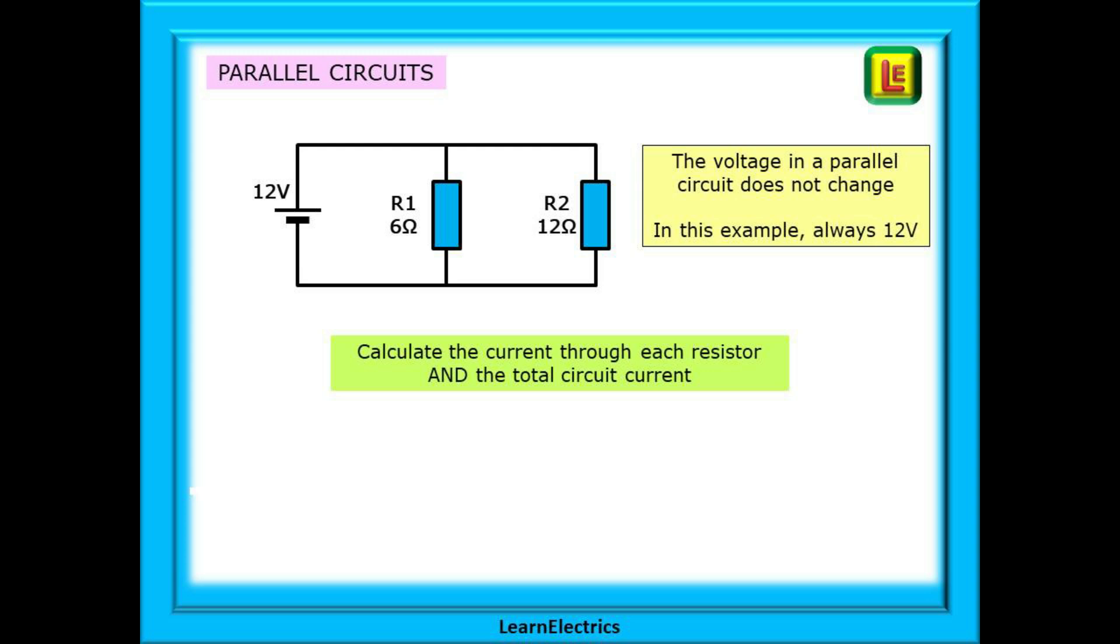Here we have a 6 ohm resistor and a 12 ohm resistor in parallel. They are across a 12 volts supply, and we can now calculate the total circuit current.